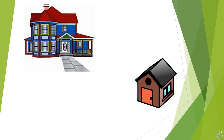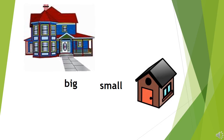Now let's see what is the opposite of big. The opposite of big is small. Repeat after me: big, small. You can see in the picture there is a big blue color house, and another picture shows a small house. So what is the opposite of big? Small.